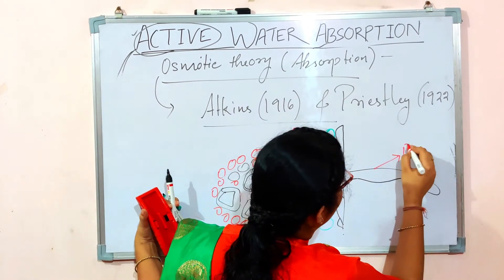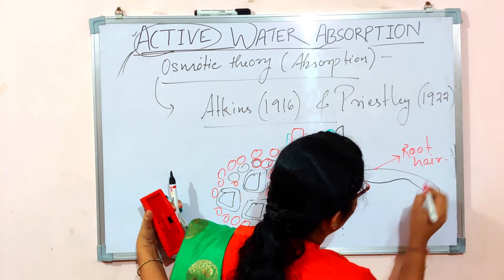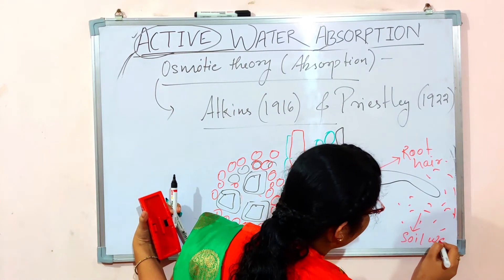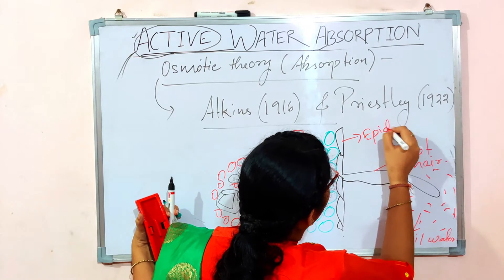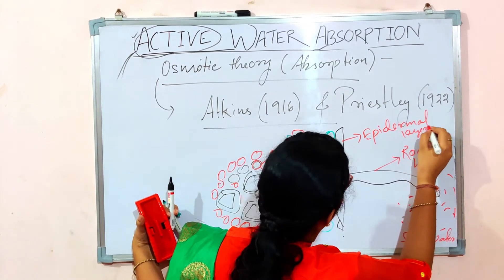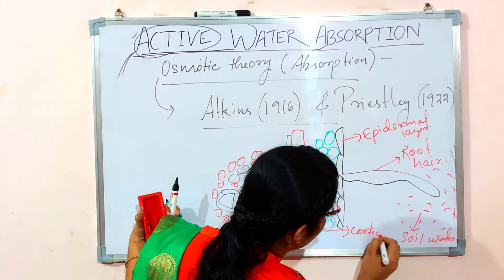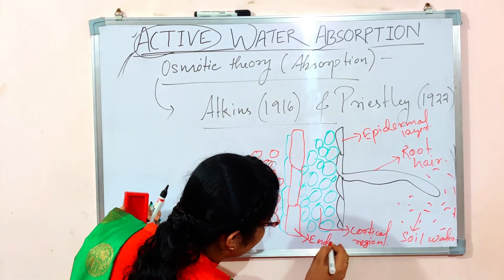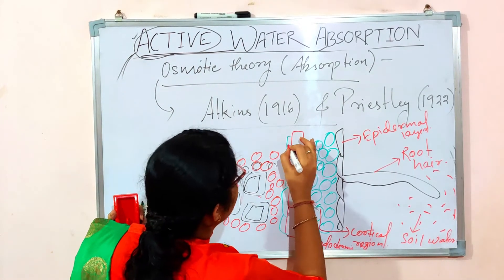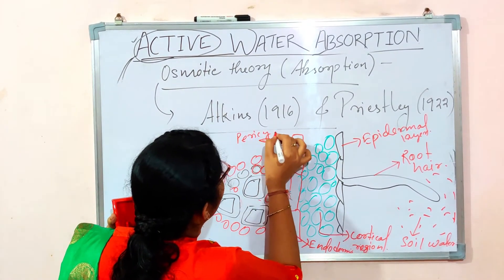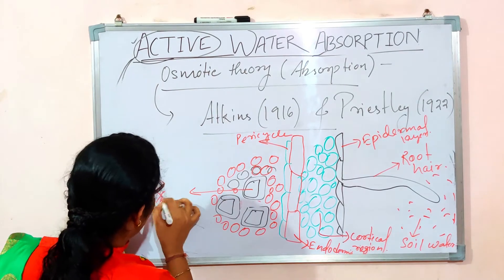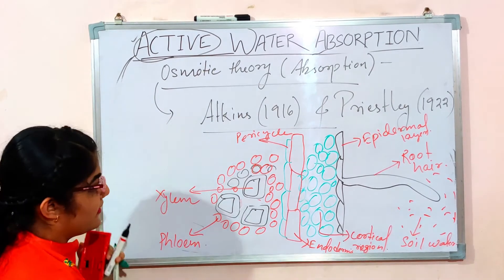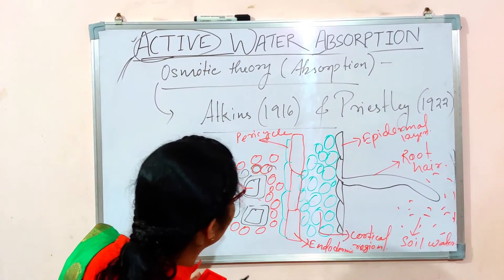In the diagram: outside is the soil water, then the epidermal layer, then the cortical region, then the endodermis, then the pericycle, then the xylem, and the phloem. This is the complete diagrammatic layout of the root hair cross-section.